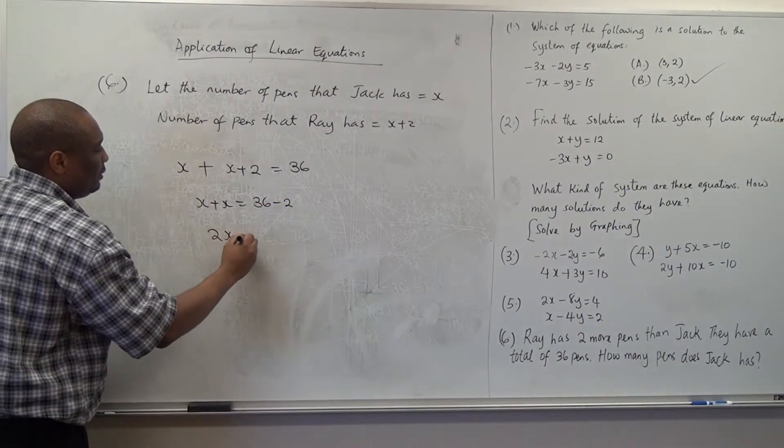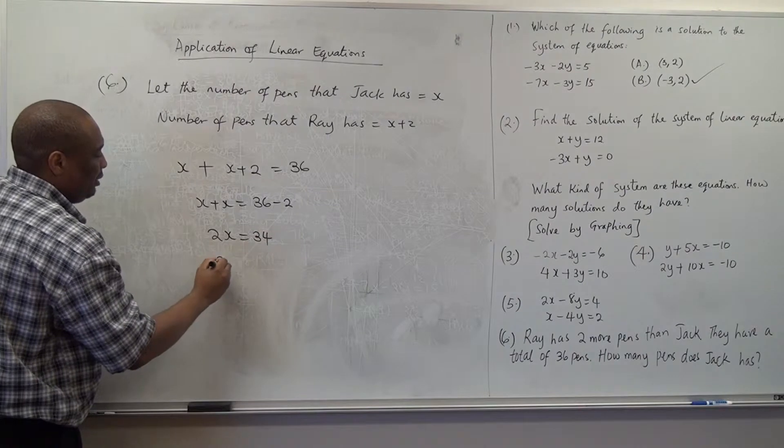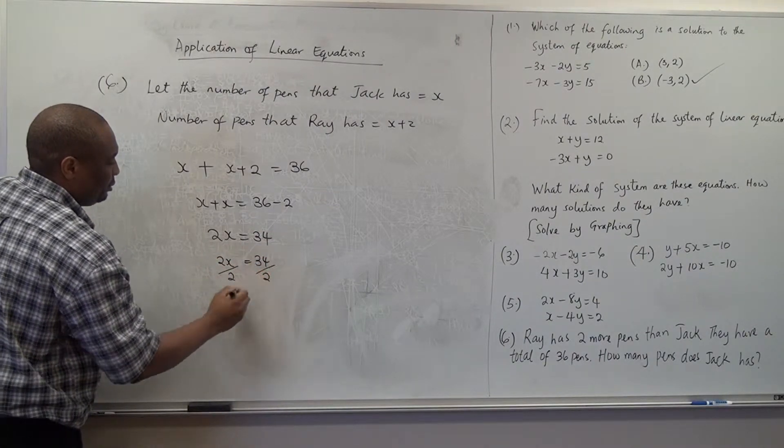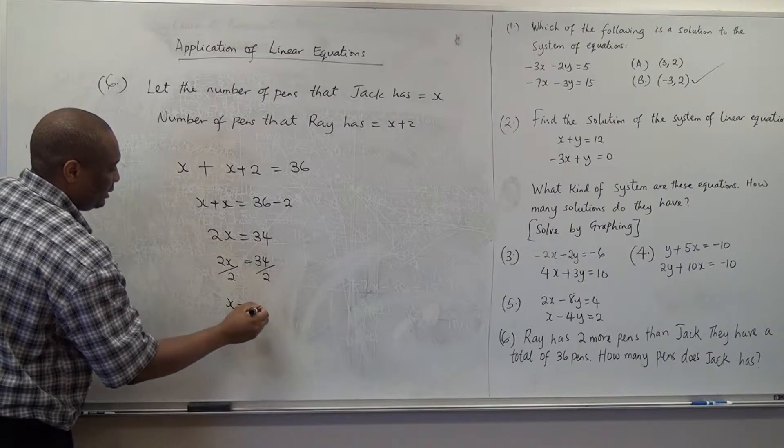So, two x will give us thirty-four. And then you divide both sides by two. Which is thirty-four over two. And x will be seventeen.